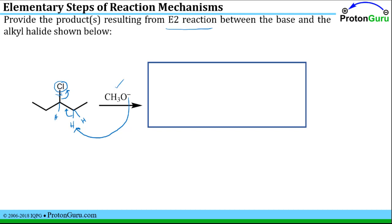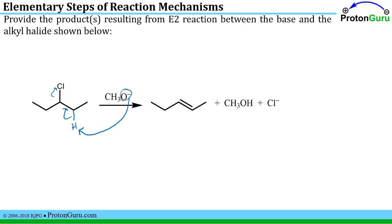If we think about what the product would look like for all of those things happening at the same time, we see that we've made a sigma bond from this oxygen to this hydrogen, and that leads to the formation of methanol. The chlorine has been pushed off with the electrons to make chloride, and the two electrons we put into this space, as represented by this arrow, that leads to the formation of this double bond.